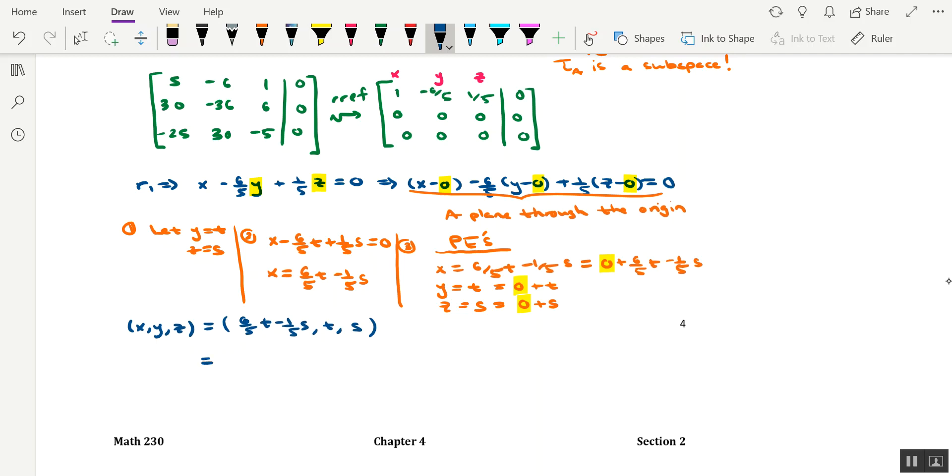Now, my claim is that this vector that's on the right-hand side could actually be written as the sum of three vectors. The first vector being 0, 0, 0, being added to a second vector, which will involve the parameter t. I'll put t in front of an ordered triple here would be 6 fifths, comma, 1, comma, 0. The third vector is going to involve the parameter s. And I'm going to put it out in front of an ordered triple here as well. The components of it would be negative one-fifth, 0, and 1.